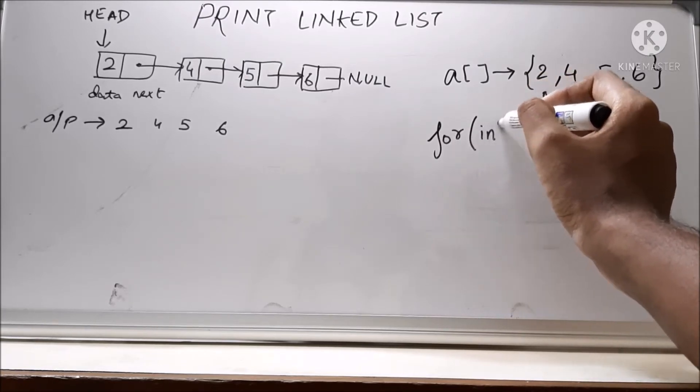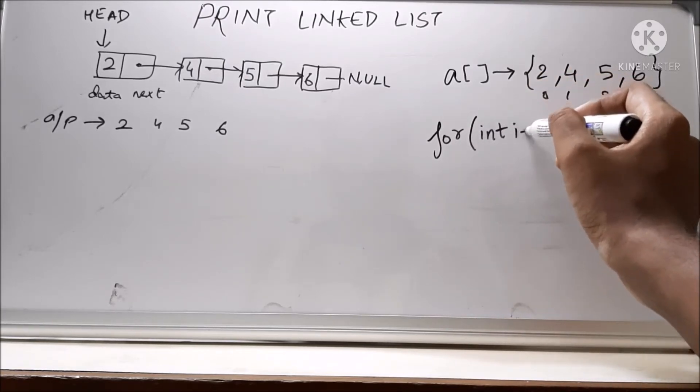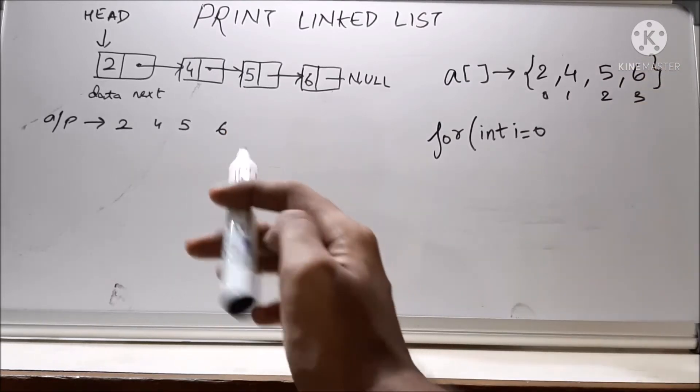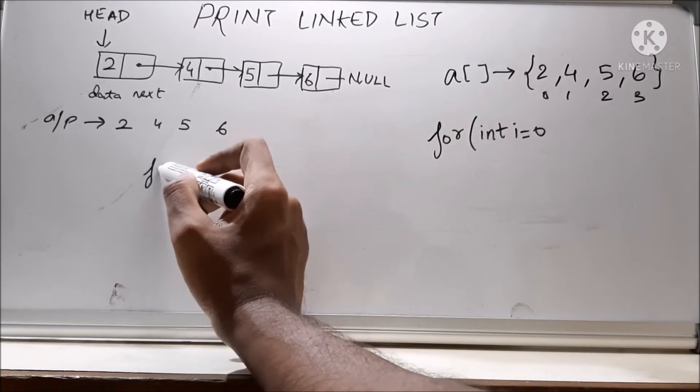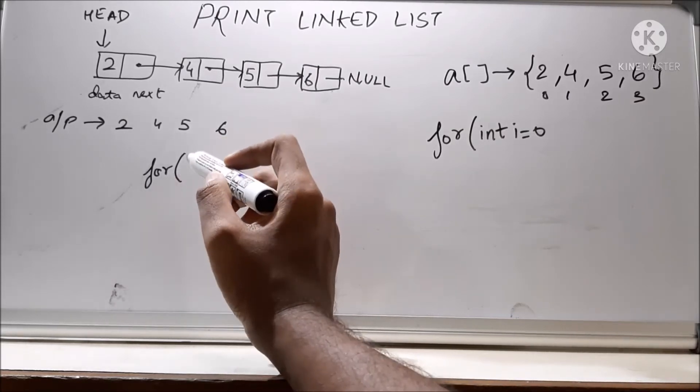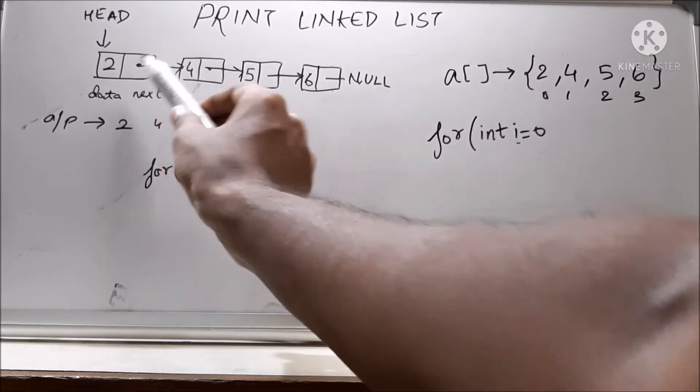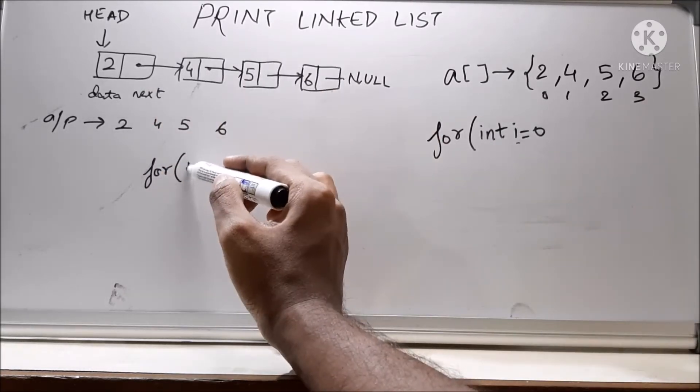So we will have for loop, say int i equal to 0, 0 because it is the starting index. So for linked list what we will do, we will do the same for loop. Here the index are integer values, so we put int i. Here these are nodes, so we will create a node.